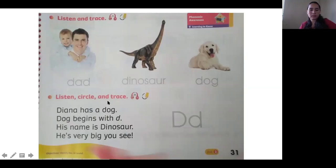It's a listen, circle, and trace. Diana has a dog. Dog begins with D. His name is Dinosaur. He is very big, you see. D. Then you're going to trace the letter D.